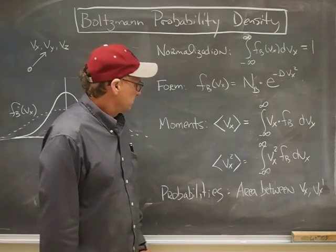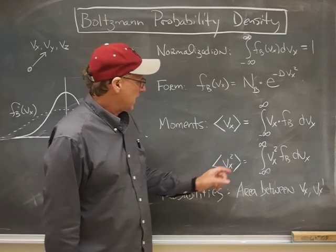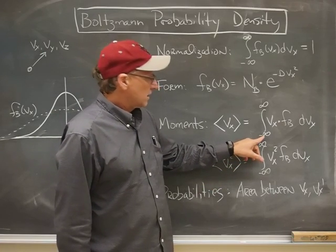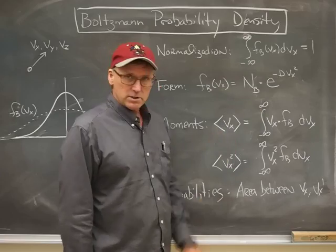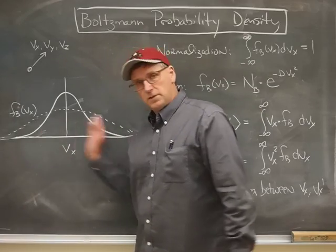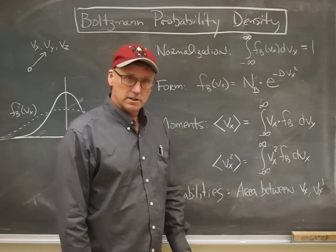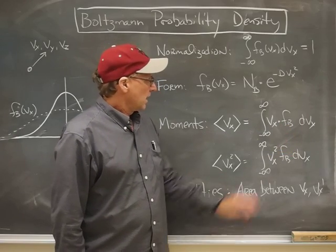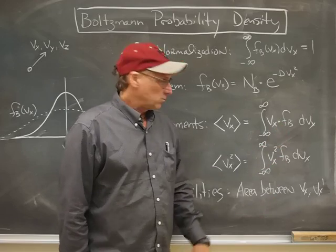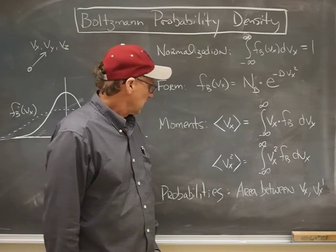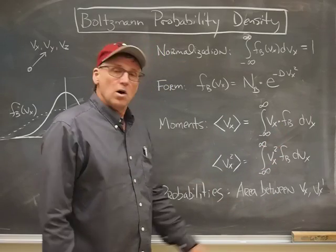And the way you get at it mathematically is to say I'm going to integrate from minus infinity to plus infinity because that's the range of vx. I'm going to take vx times that Boltzmann probability density, and the number that I get out of it will be just the average x component velocity.